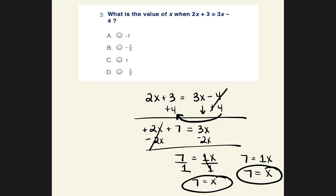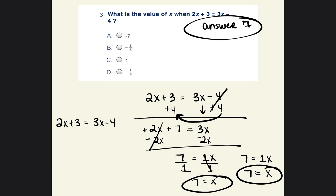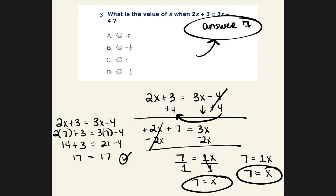That's not an answer choice — interesting. The answer should be 7. I took this test online, so let's check: 2x plus 3 equals 3x minus 4. Plugging in 7: 2 times 7 plus 3 equals 3 times 7 minus 4. 14 plus 3 is 17; 21 minus 4 is 17. Yes, the answer is positive 7. They may have accidentally put the wrong answer choices. I plugged in 7 and they equal each other, so our answer is positive 7.